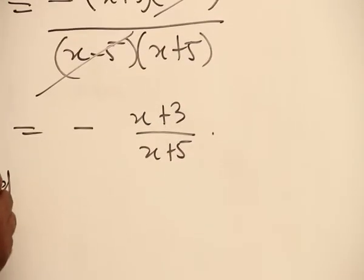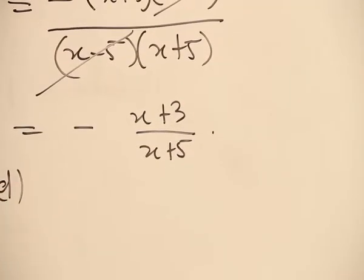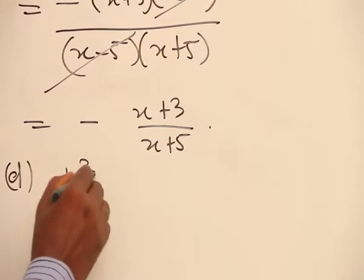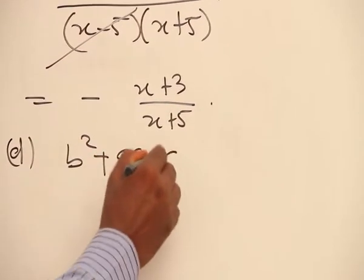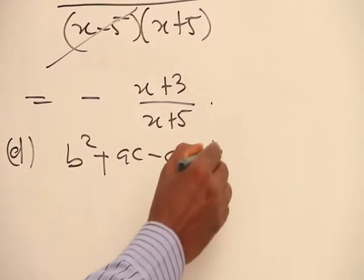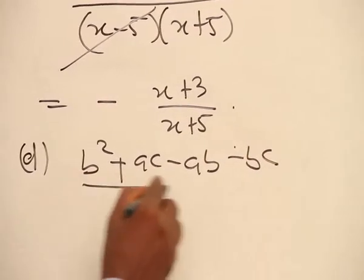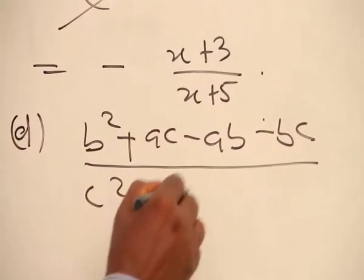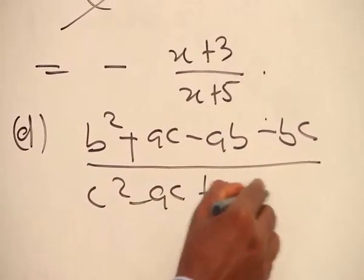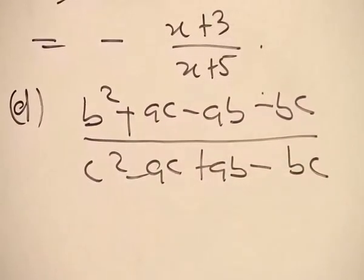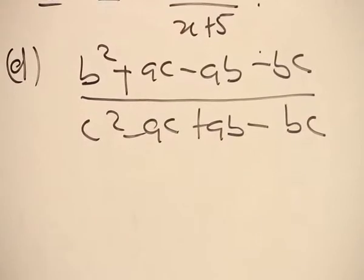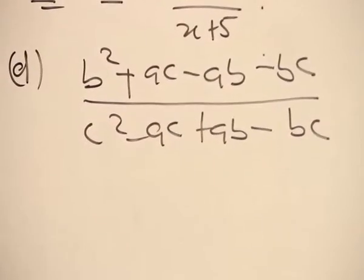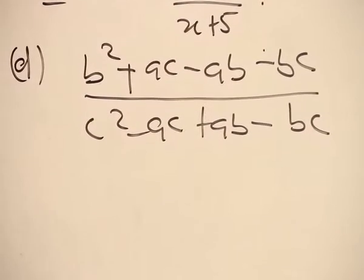To continue, we have v. This time we are given b squared plus ac minus ab minus bc, all over c squared minus ac plus ab minus bc. The solution here remains the same. Follow the principles: factorize the numerator and then the denominator.